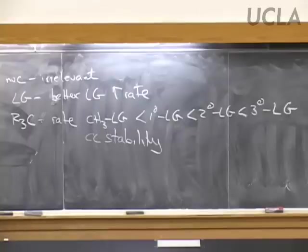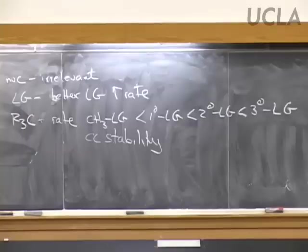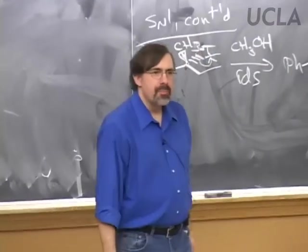In the transition state that controls the rate, the carbon that used to have the leaving group is gaining positive charge — it's beginning to look like a carbocation. Depending upon how readily that transition state can handle that delta-plus, that's going to influence the ease at which it's achieved. So the better this carbon can bear the positive charge, the easier it is to happen.